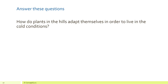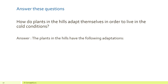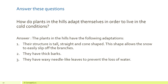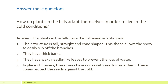How do plants in the hills adapt themselves to live in cold conditions? Plants in the hills have the following adaptations: their structure is tall, straight, and cone-shaped, which allows snow to easily slip off the branches. They have thick barks and waxy needle-like leaves to prevent the loss of water. In place of flowers, these trees have cones with seeds in them, and these cones protect the seeds against the cold.